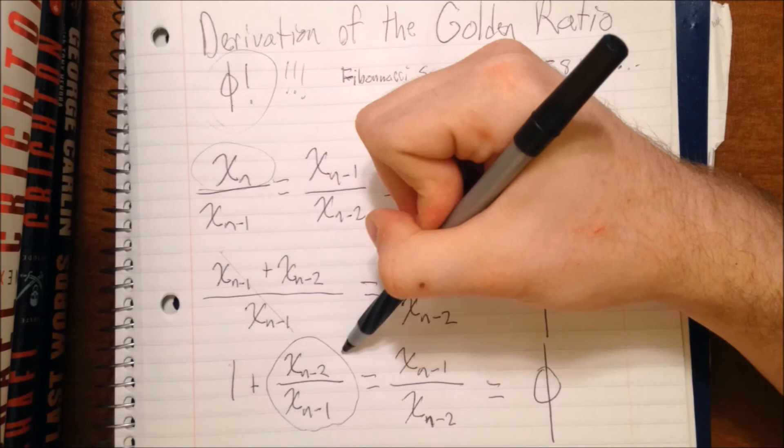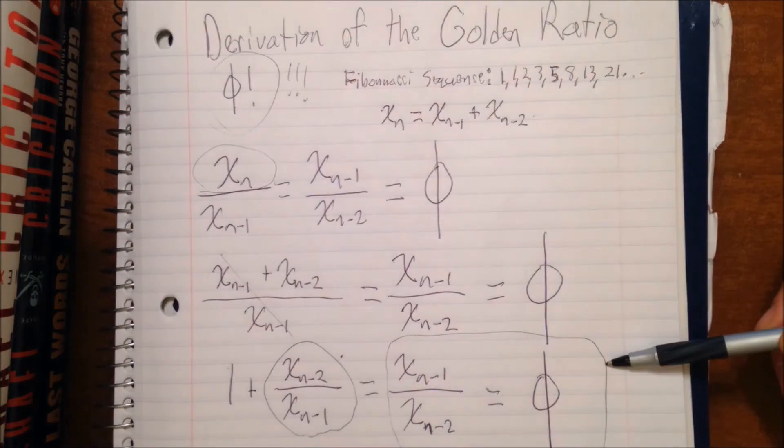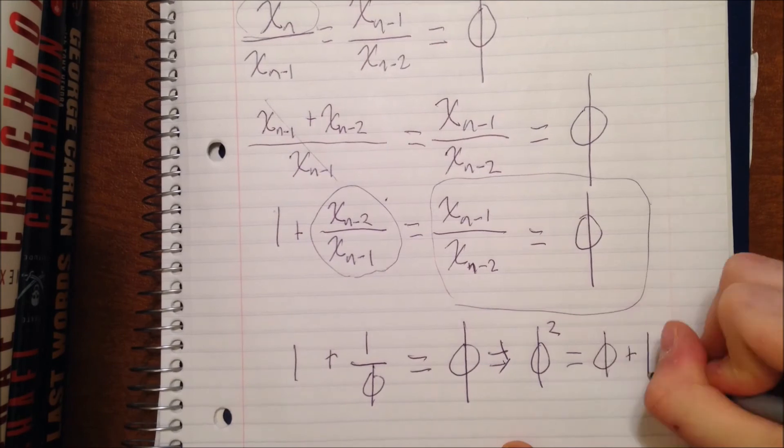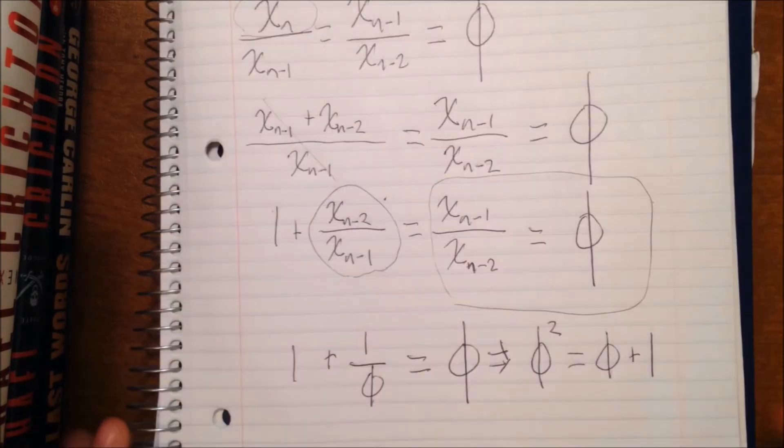Now if you notice, the second term in that equation on the left-hand side, the xn-2 over xn-1, is the inverse of what we've got on the right-hand side, xn-1 over xn-2, which is equal to phi. So we can rewrite this again as 1 plus the inverse of phi is equal to phi.